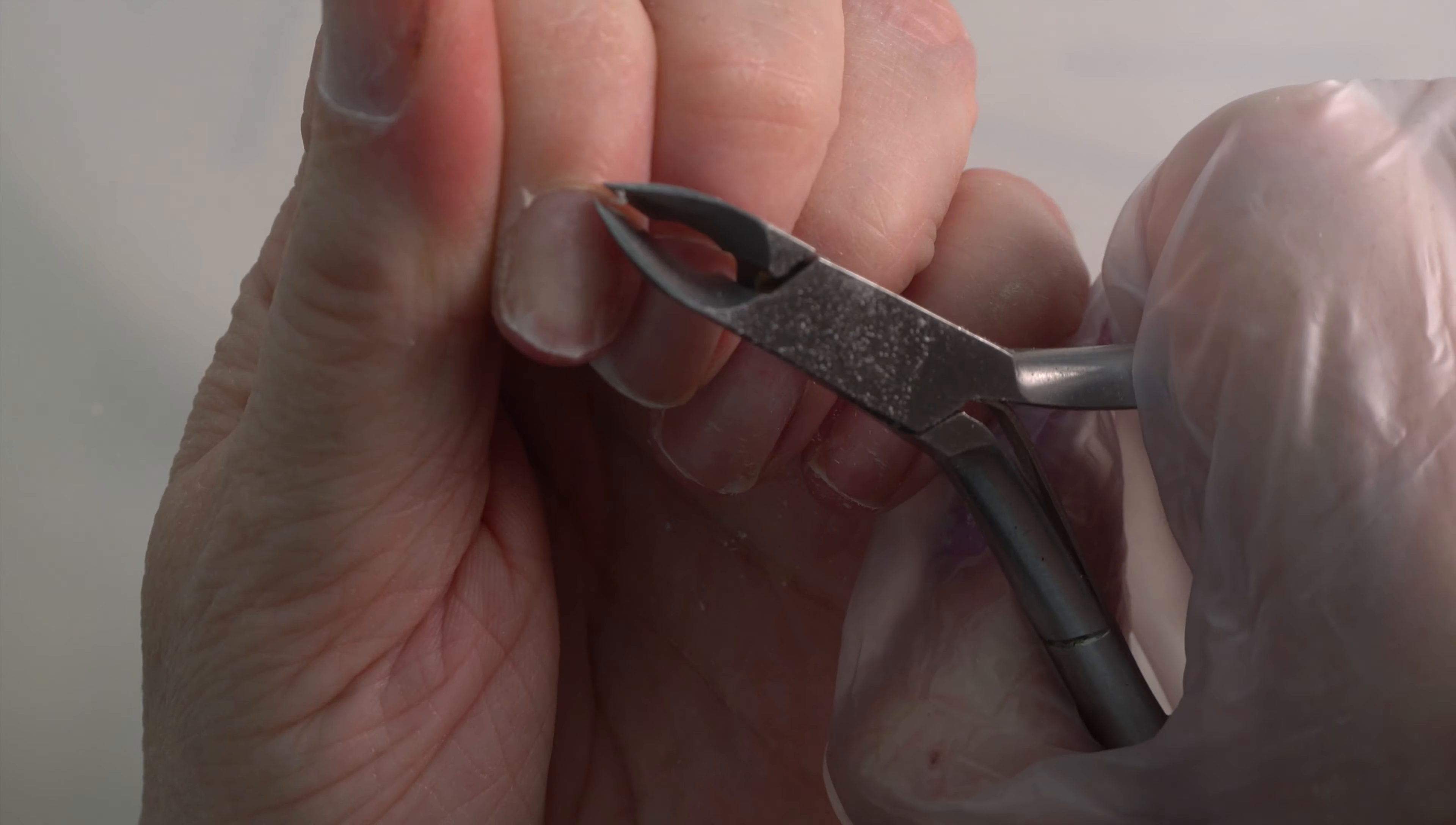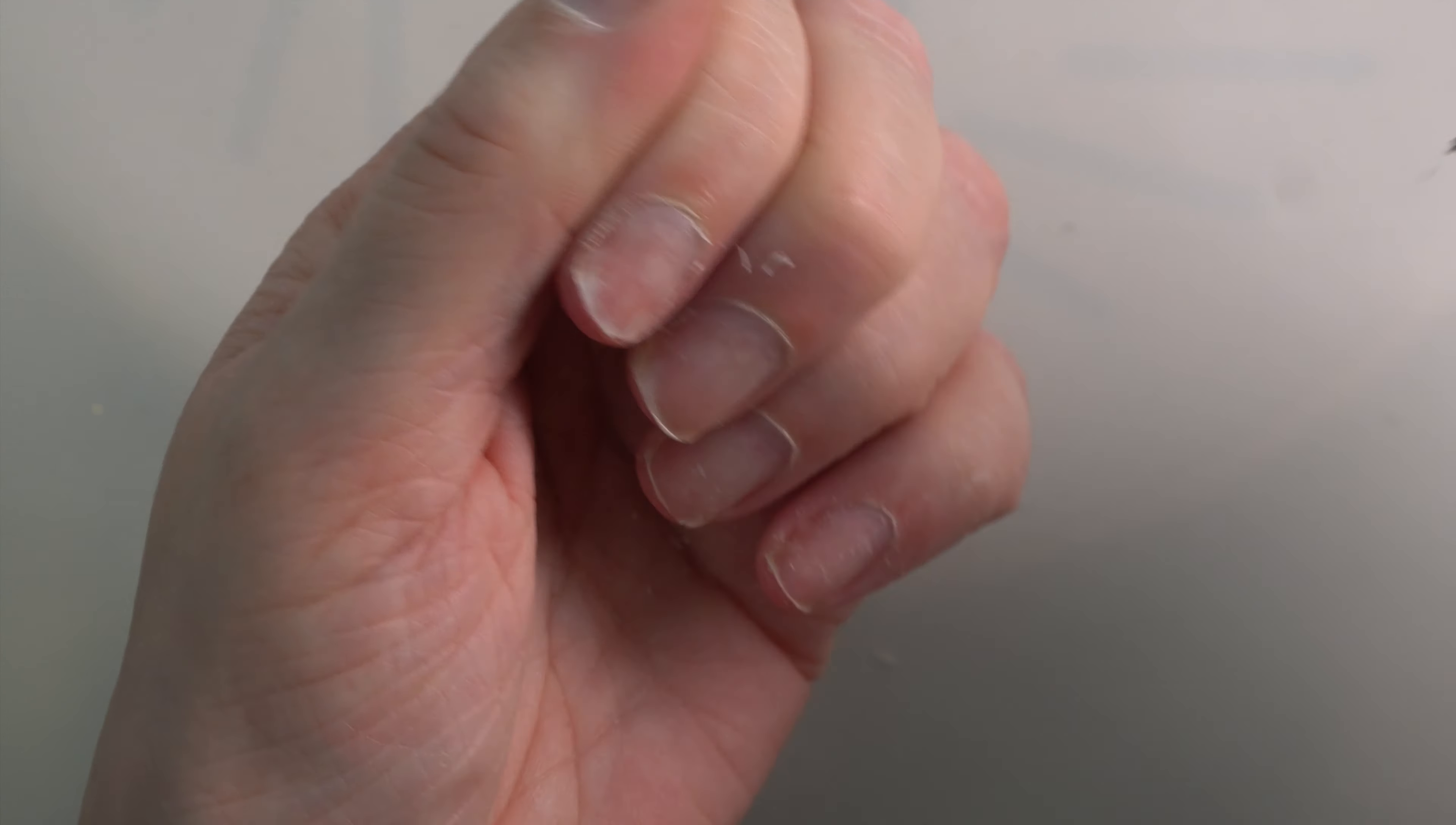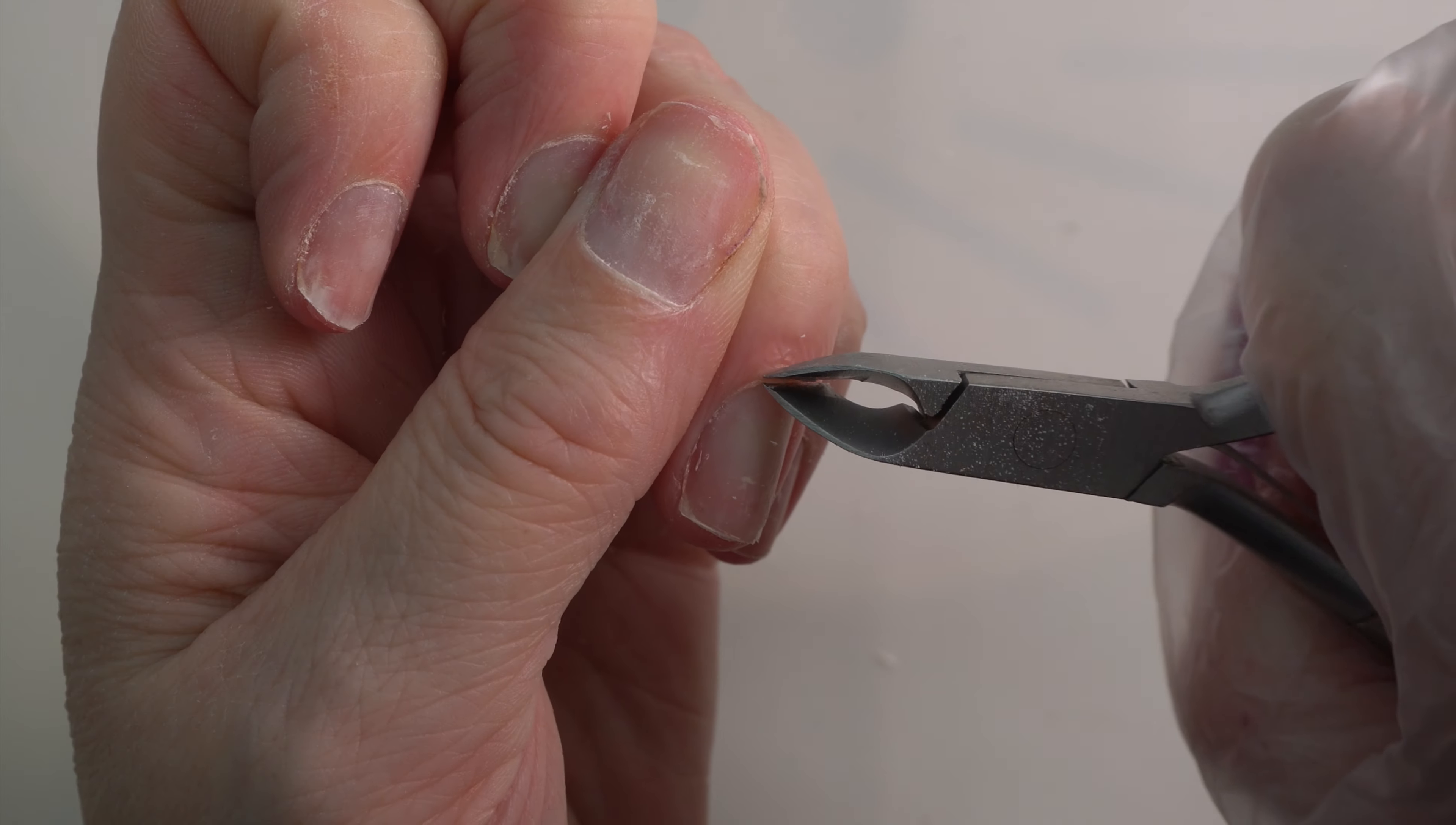Dust off any excess, then come in with some cuticle nippers to remove any excess dead skin. Do not remove any live skin because the skin will bleed—not the actual nail. Just be very careful. When I first started, I was terrified of doing this and did catch myself a few times, and occasionally I still do.